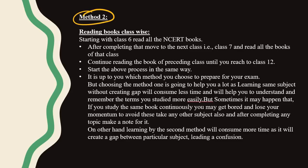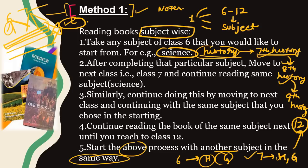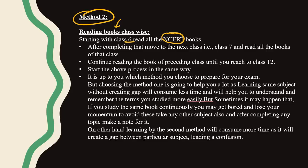Method 2 is reading books class-wise. Starting with class 6, read all the NCERT books. Then after completing class 6, move to class 7, read all the books, and you can do this till class 12.